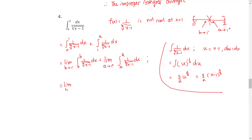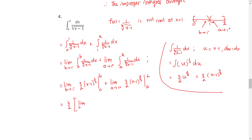The first part is the limit as B approaches 1 from the left of 3/2 times x minus 1 to the power 2/3, evaluated from lower limit 0 to upper limit B. The second part is the limit as A approaches 1 from the right of 3/2 times x minus 1 to the power 2/3, evaluated from A to 2. Both parts share the common factor 3/2, which we factor outside. For the first group, we find the limit as B approaches 1 negative of B minus 1 to the power 2/3 minus 0 minus 1 to the power 2/3.